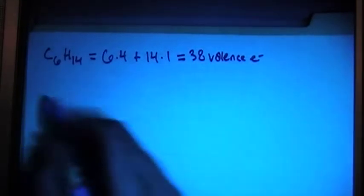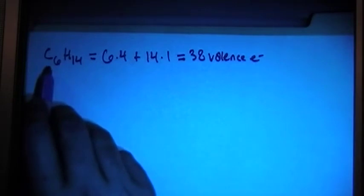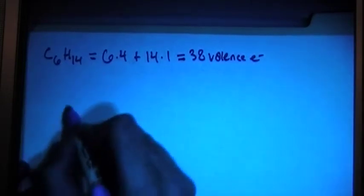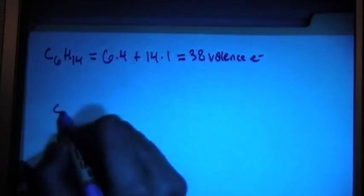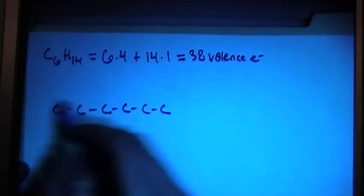Alright, but here's the straight chain structure. So carbons are the only atoms that can be the central atom in these compounds, because hydrogens can only bond once. So I'm just going to go ahead and draw the straight chain of 6 carbons.